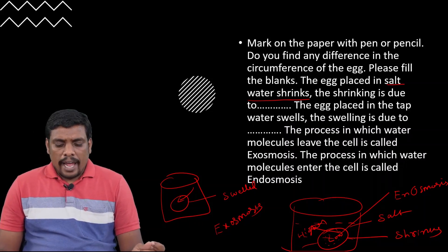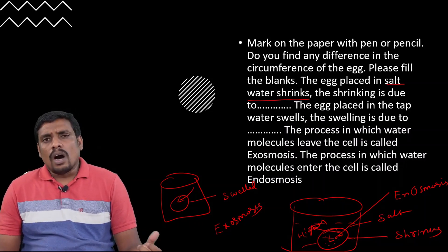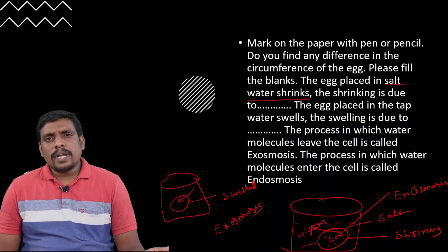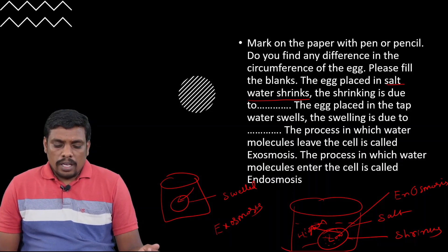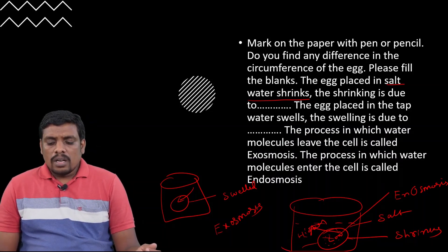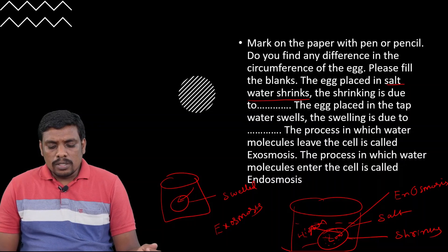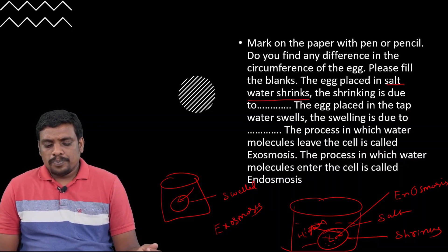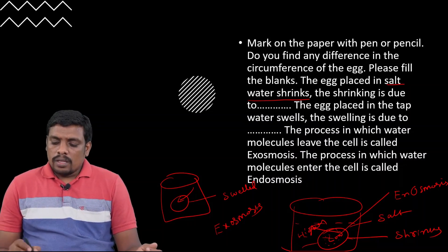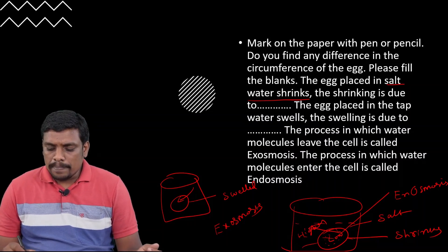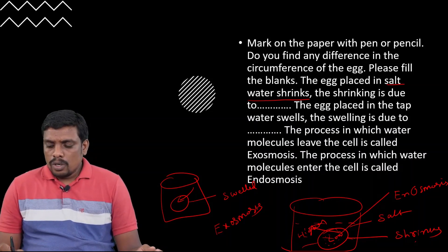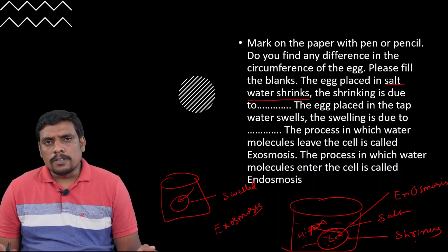Now, 'exo' means out and 'endo' means in. In this way, the egg which is placed in salt water shrinks due to osmosis. What kind of osmosis occurred here?